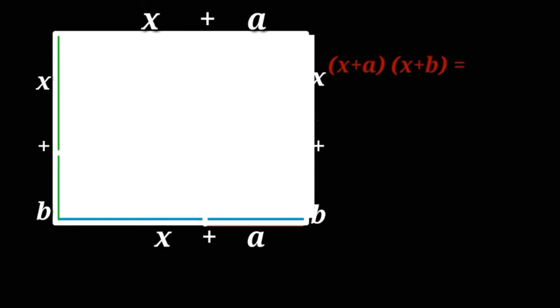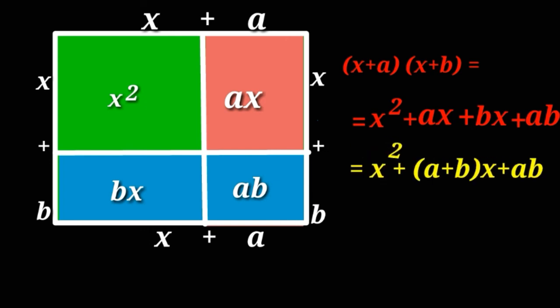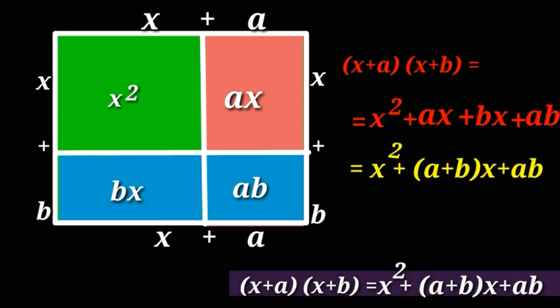So (x+a)(x+b) is equal to x² + ax + bx + ab. So (x+a)(x+b) is equal to x² + (a+b)x + ab.